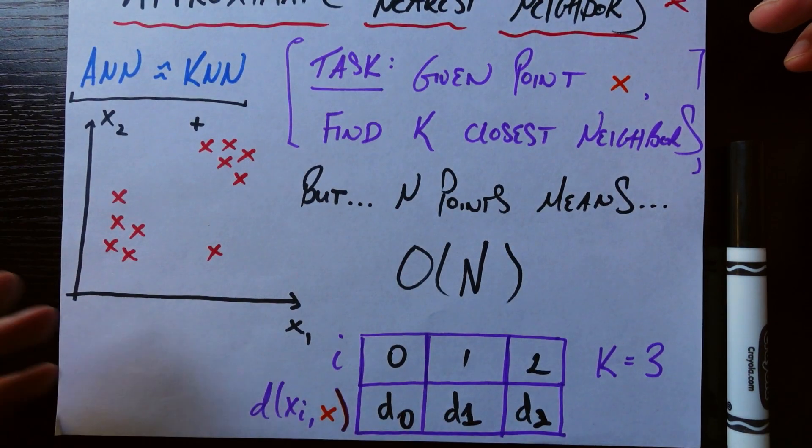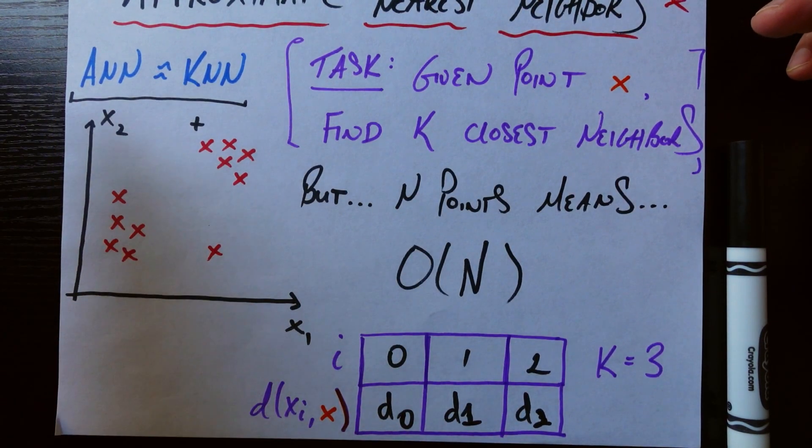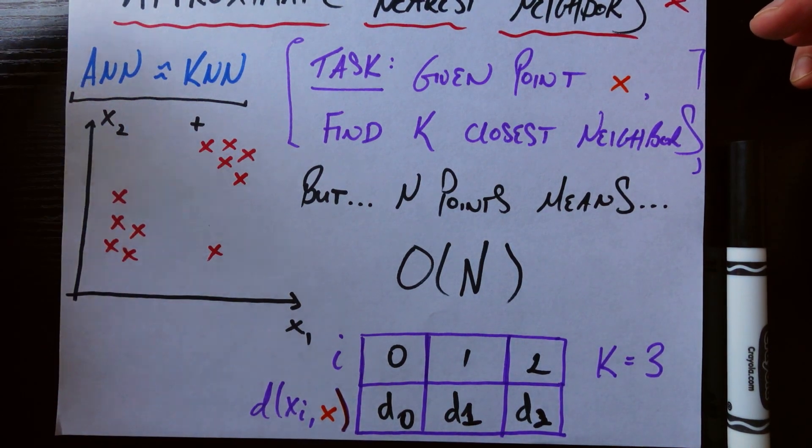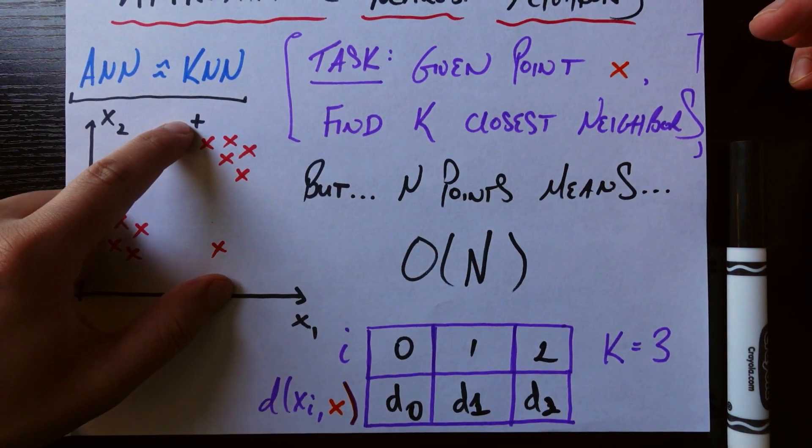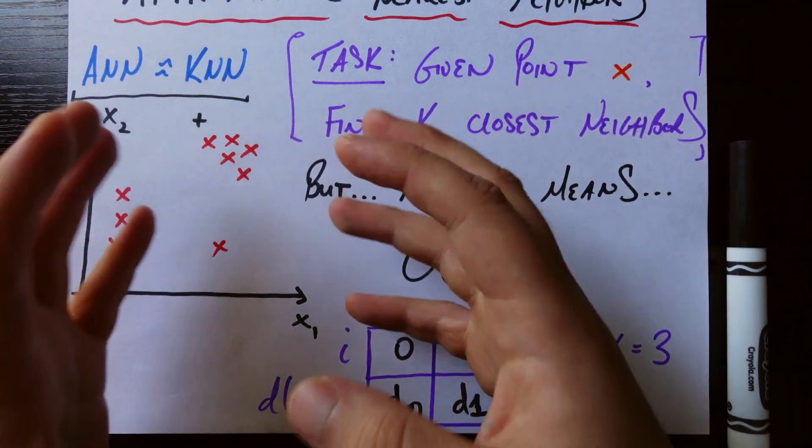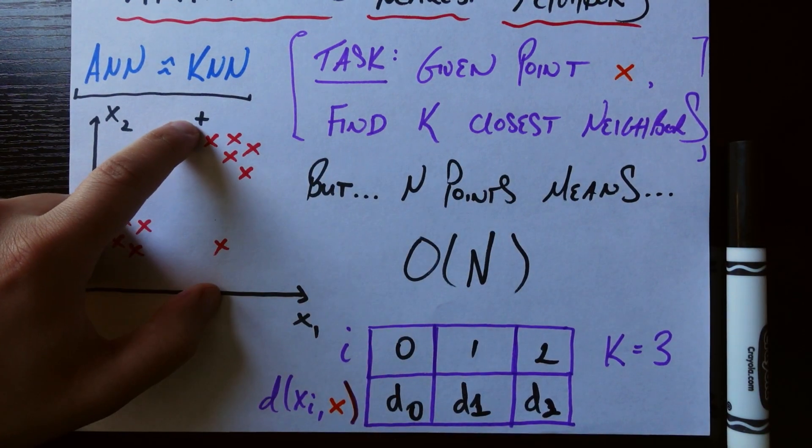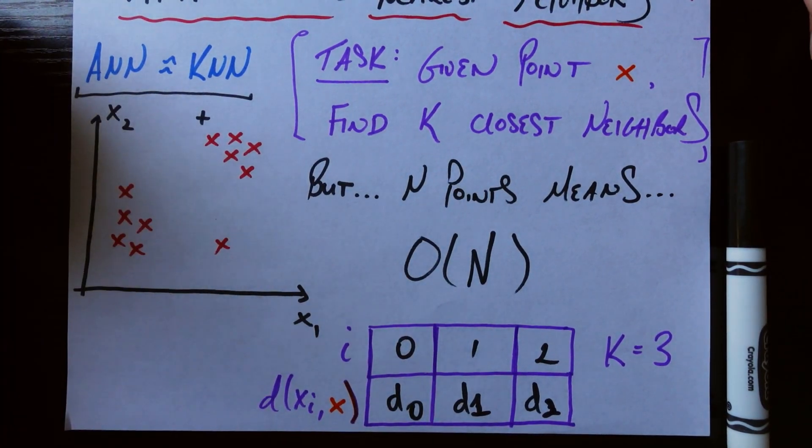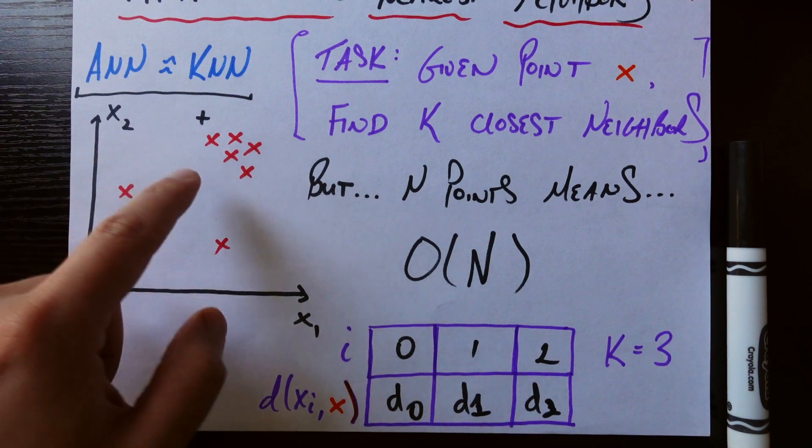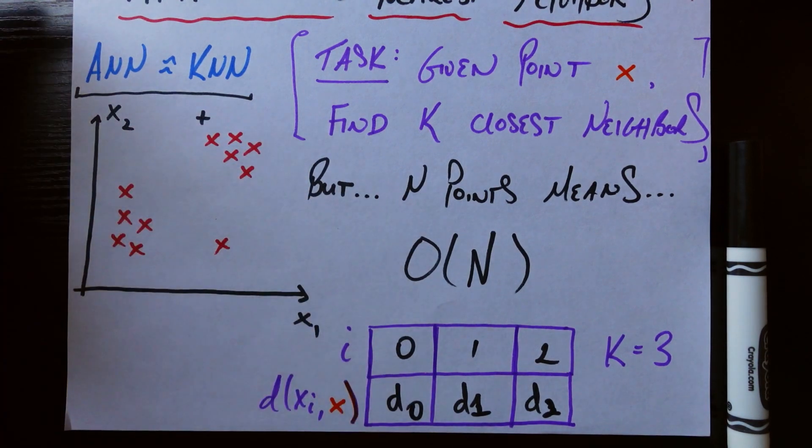So given I have some data, let's say it's just simple two-dimensional data, so all these red x's you see are my initial data points. And let's say a new data point comes along, this black x right here. K-nearest neighbor says go find me the k-closest neighbors, literally physically in space, to this new data point. And so for example if k is equal to 3, I think anybody, even if you've never taken a math class, would say that the three closest neighbors are these three red x's that are right here, and you would be correct.